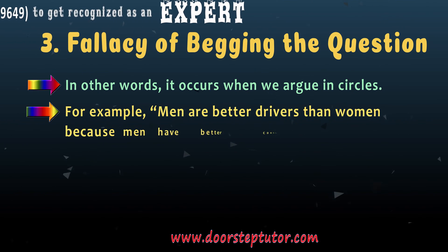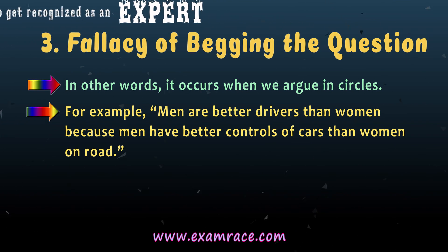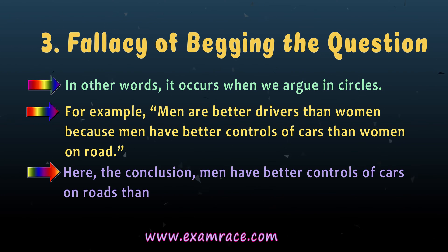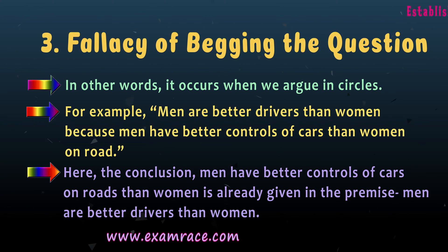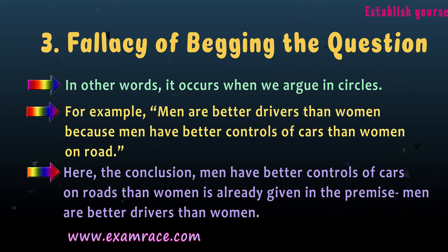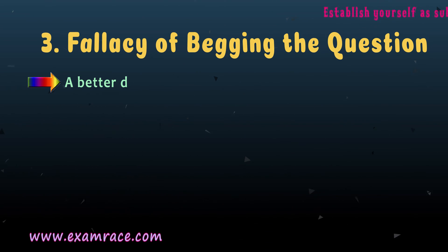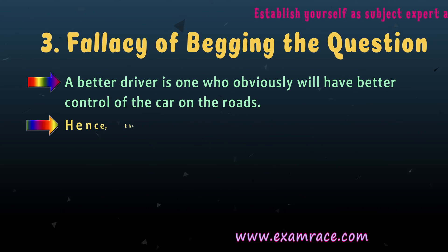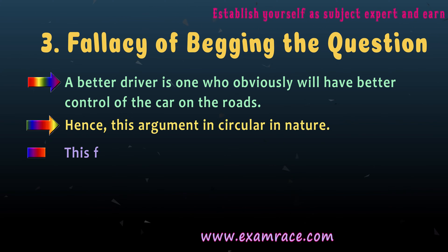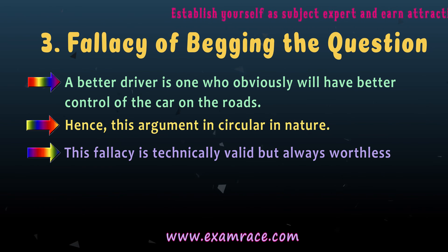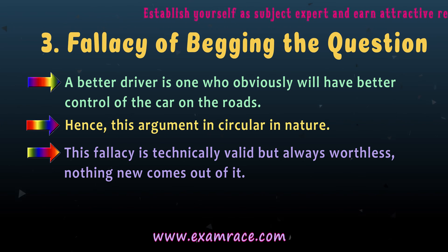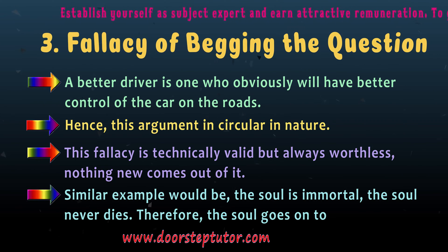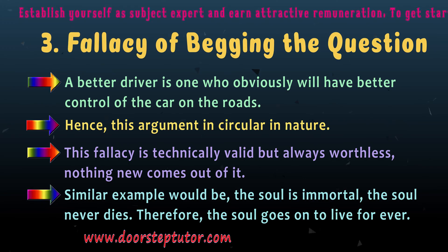For example: men are better drivers than women because men have better control of cars than women on roads. Here the conclusion — men have better control of cars on the road than women — is already stated in the premise that men are better drivers than women. Hence the argument is circular. This fallacy is technically valid but always worthless; nothing new ever comes out of it. A similar example: the soul is immortal, the soul never dies, therefore the soul goes on to live forever.